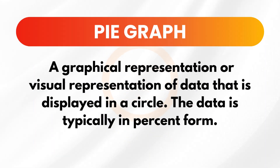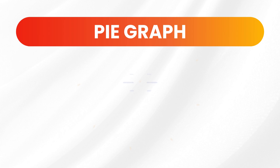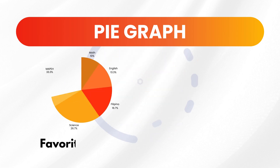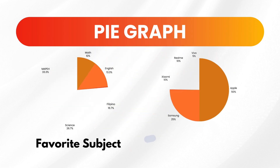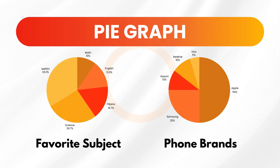Next is the pie graph, also known as a circle graph or pie chart. It is a graphical or visual representation of data displayed in a circle, and the data is typically in percent form. For example, we can use a pie graph to present how many percent of your classmates love studying science or how many of them are using Apple products.